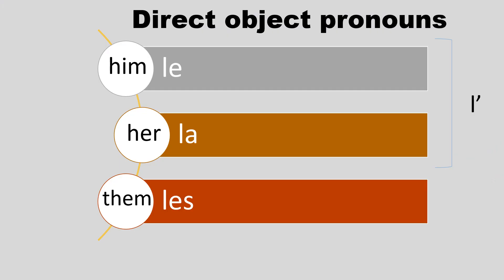So we're going to have three forms. Him will be le. Her will be la. And them — more than one — will be les. I remind you that le and la will change to an L apostrophe if the word starts with a vowel or a silent H.